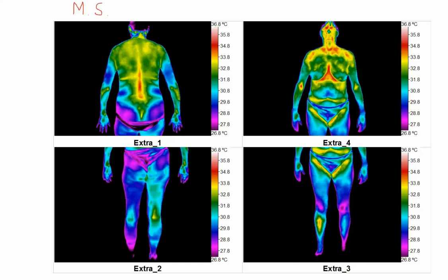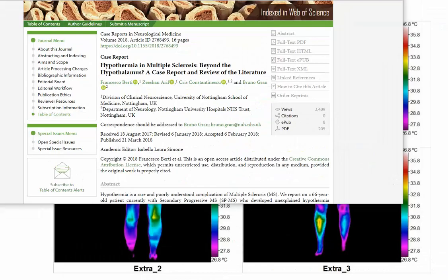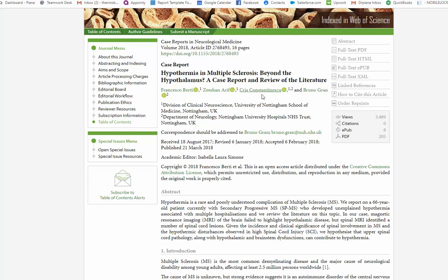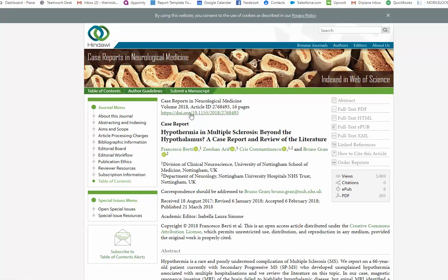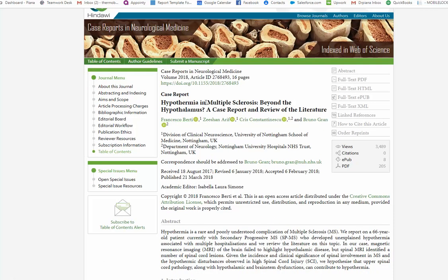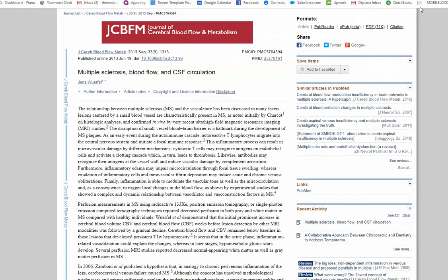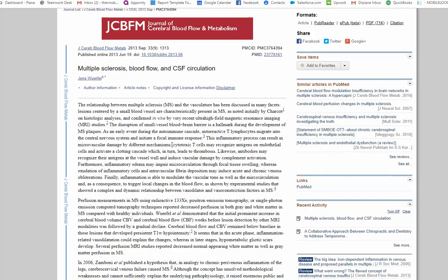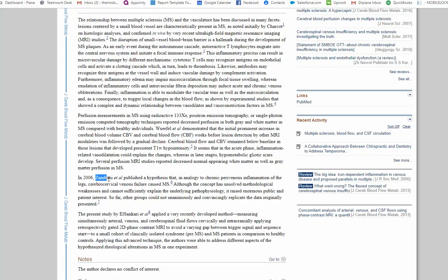But you can see that in the literature, when I just did a search on the internet, I came up with some articles. This one is a case study of a woman with hypothermia with multiple sclerosis. Obviously, I think they're talking about hypothermia, hypothermic state where the body goes cold.